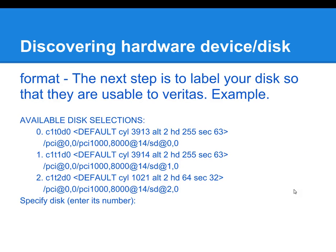Once the disk has been acknowledged by the system and the drivers have been loaded for it, the next step is to format and label the disk to prepare it for Veritas. After typing the format command, you will be presented with a menu-driven system. Simply select the number that corresponds to the disk you've installed, then select label and quit to exit the menu system.